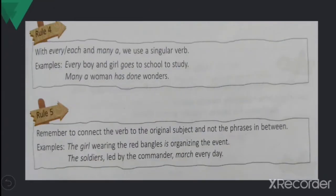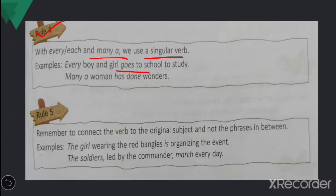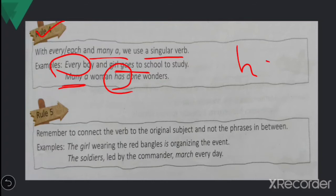Rule number four: with the words 'every,' 'each,' and 'many a,' we use a singular verb. 'Every boy and girl goes...' — 'goes' is a singular verb. 'Many a woman has done wonders' — 'has' is a singular verb, while 'have' is the plural form. So when 'every,' 'each,' or 'many a' is present, always use a singular verb.